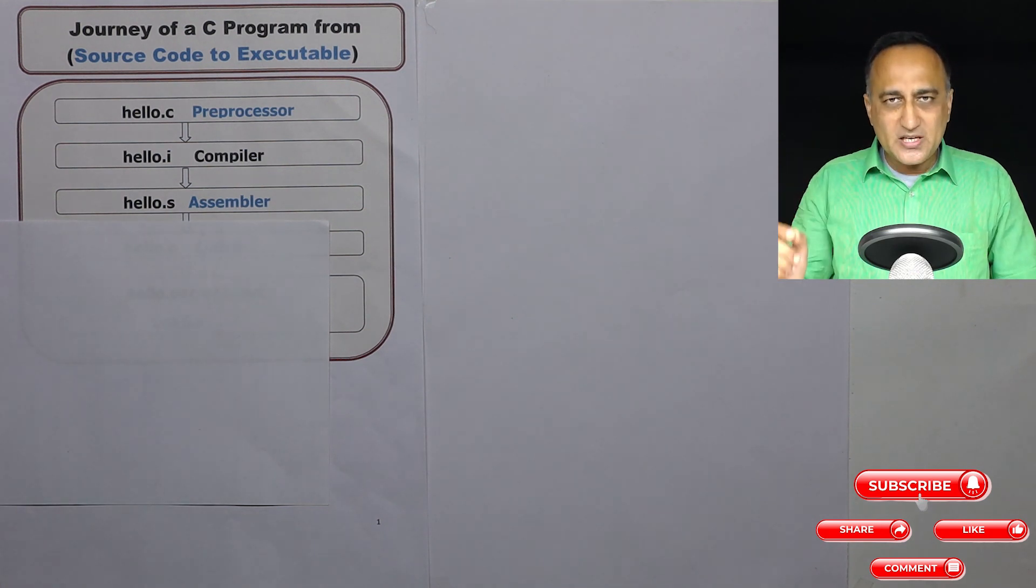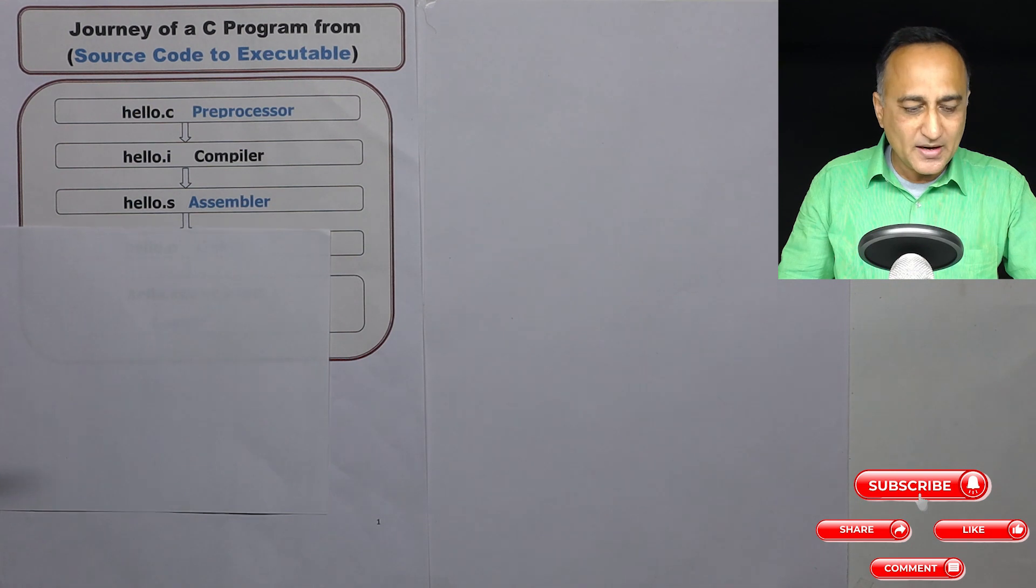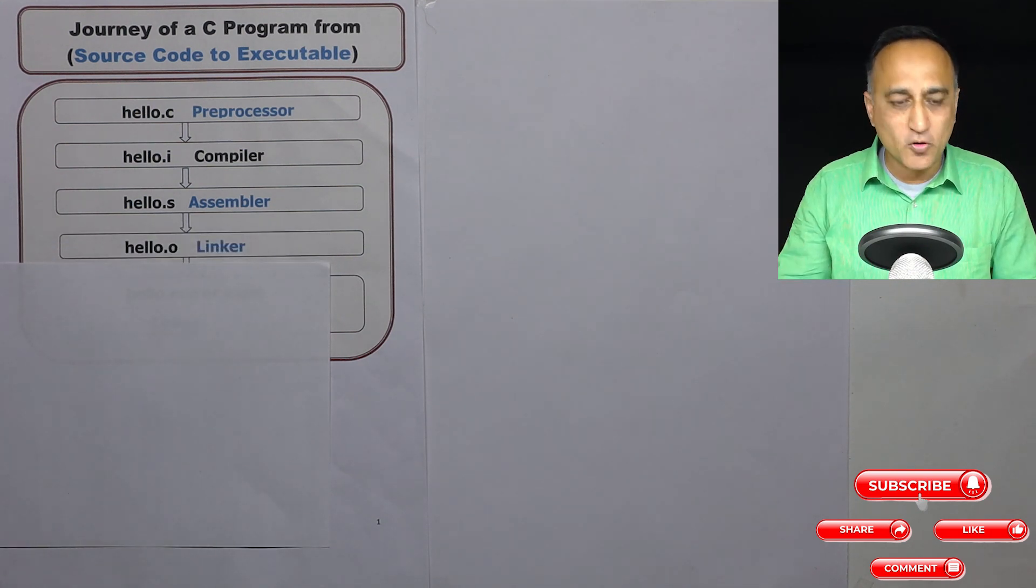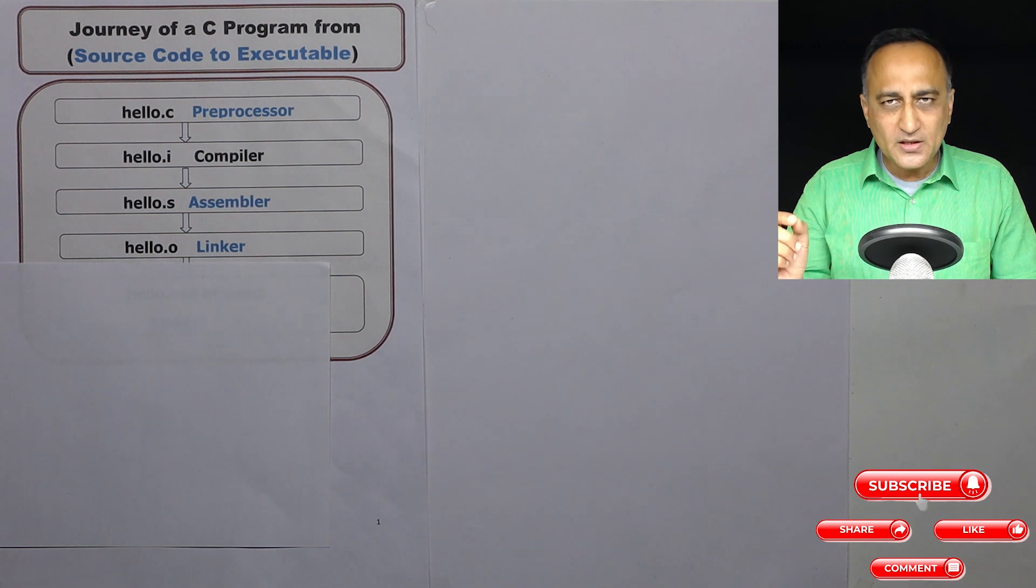Now this hello.s is taken by the assembler and converted into an object file or machine code called hello.o. But this file is still not ready for execution because in the hello.c I had used a function called printf.